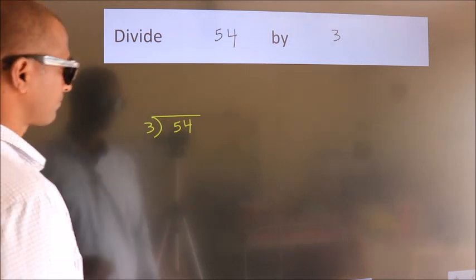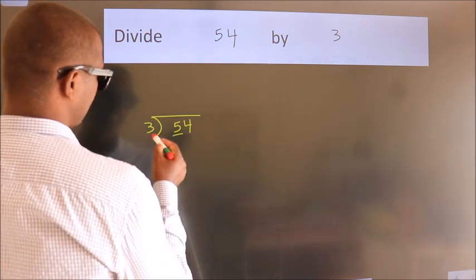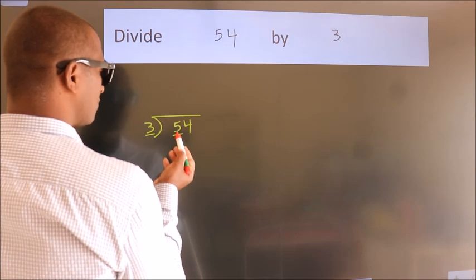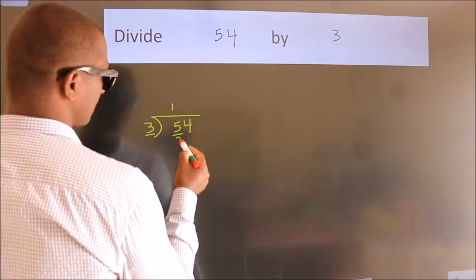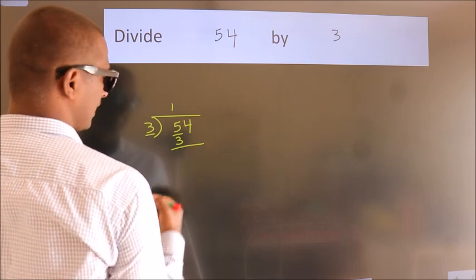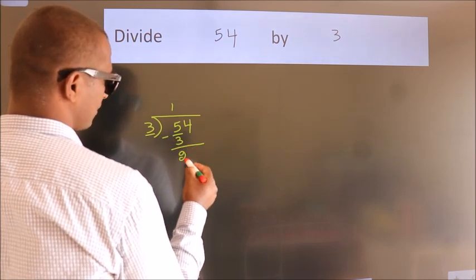Next, here we have 5, here 3. A number close to 5 in the 3 table is 3 once, 3. Now we should subtract. We get 2.